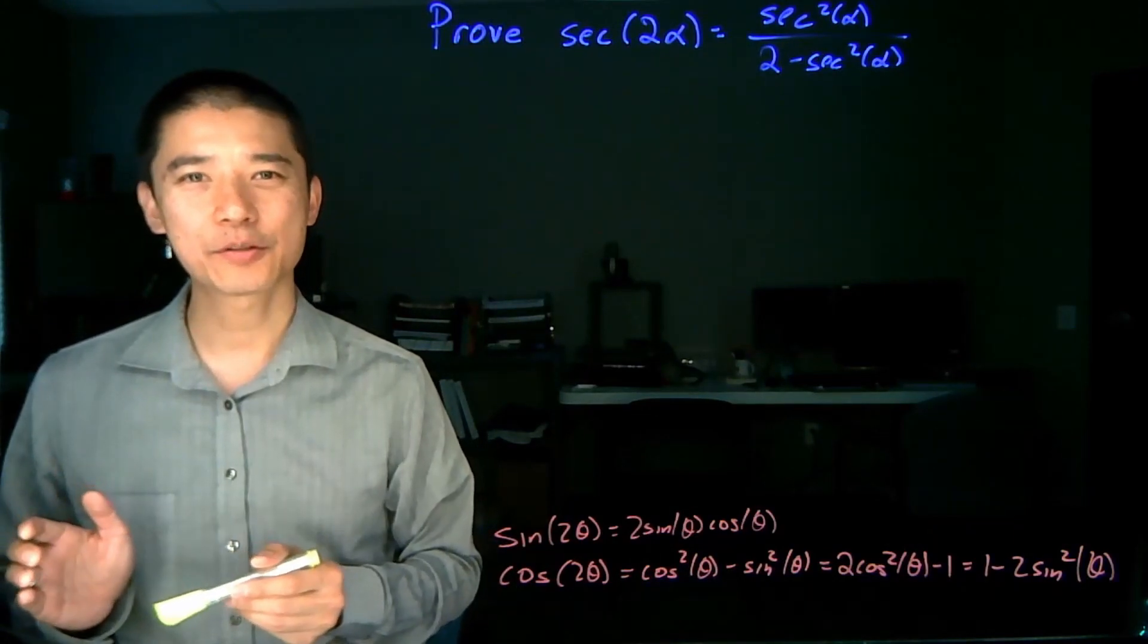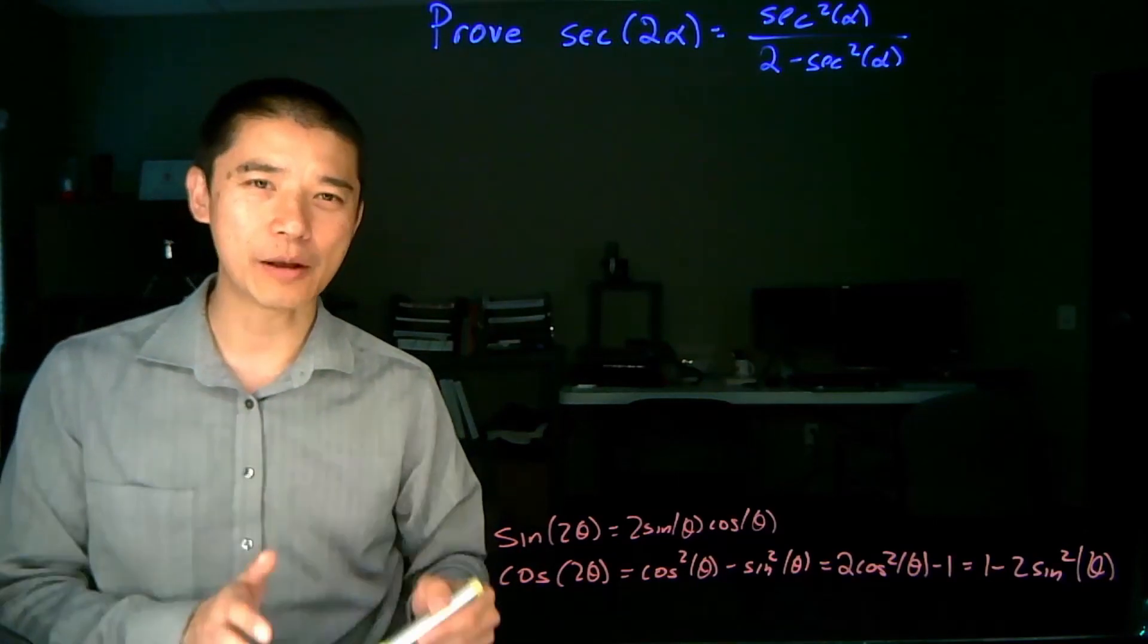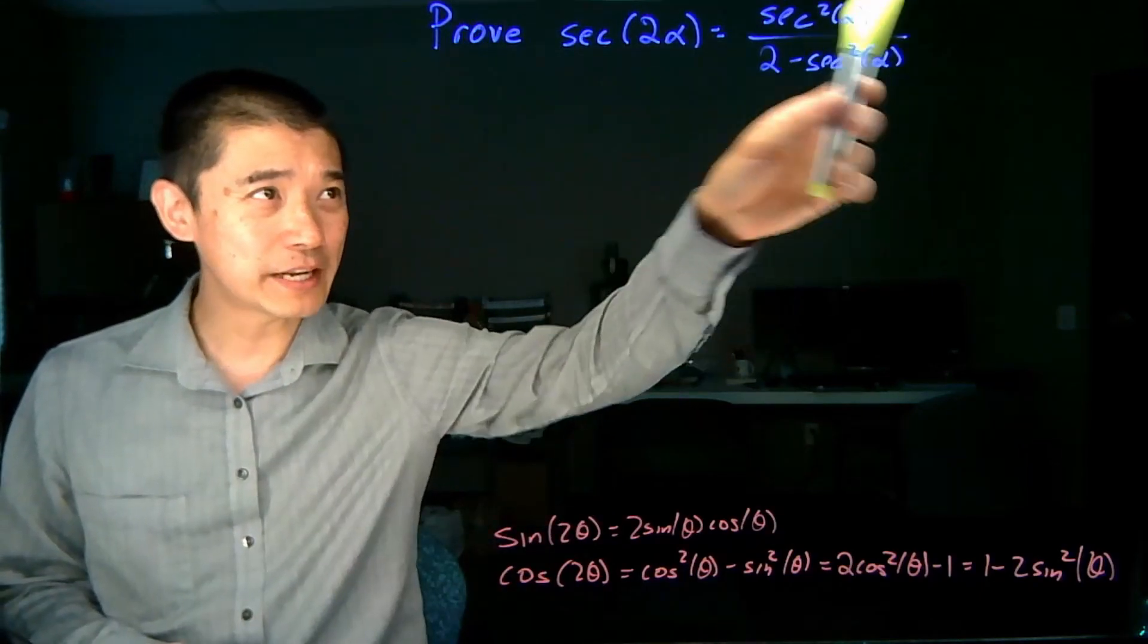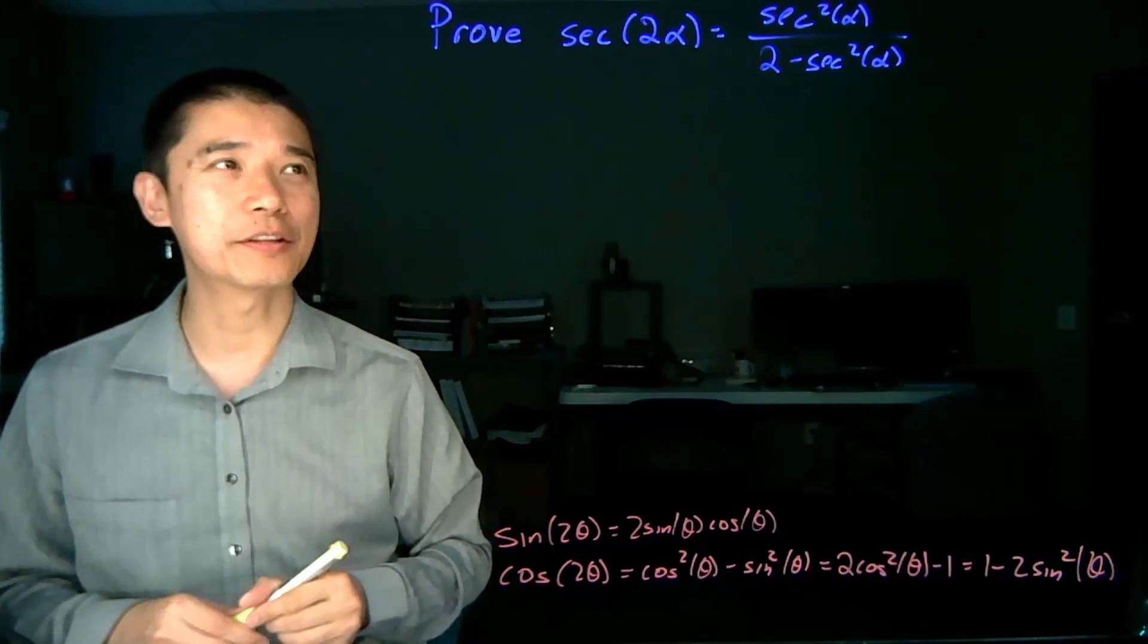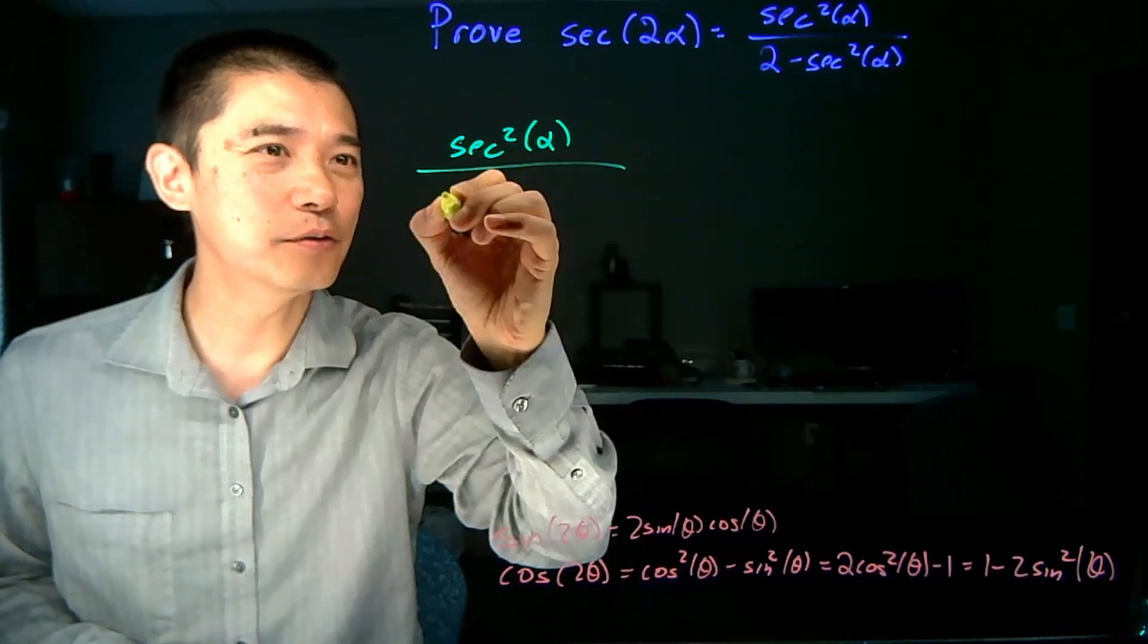So let's see how this one works. We are proving an identity, so we need to start from one side and work our way to the other. And typically, we start from the more complicated side and work our way towards the simpler. In this case, the right-hand side is the complicated side.